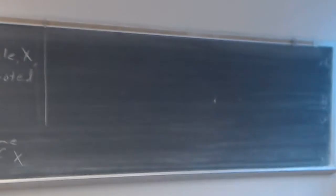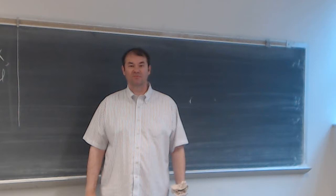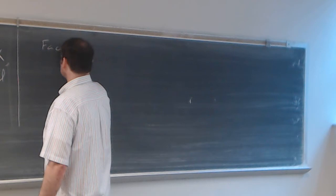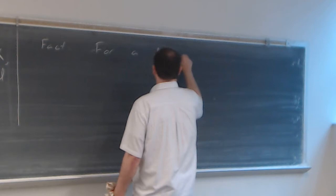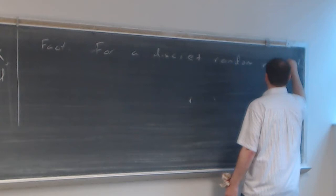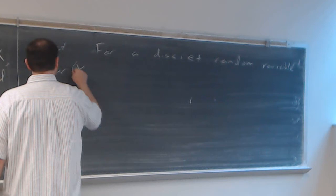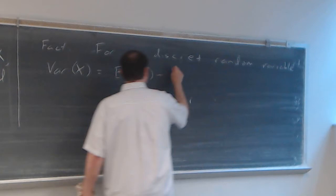It turns out that the definition isn't always the best way to calculate the variance for a random variable. So we have a fact that helps us do calculations. As a fact, for a discrete random variable, the variance of x is equal to the expected value of x squared minus the expected value of x, all squared.